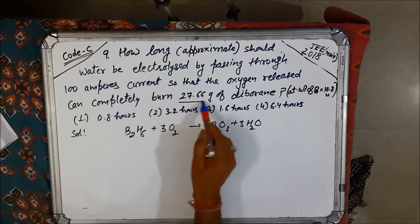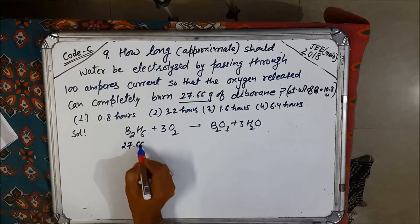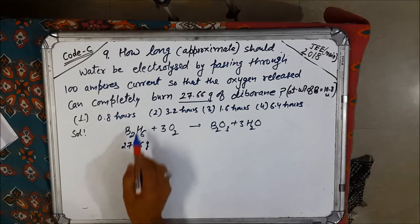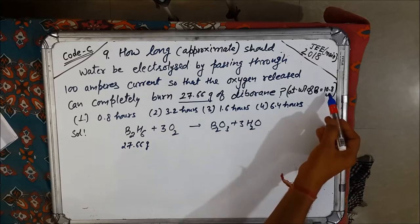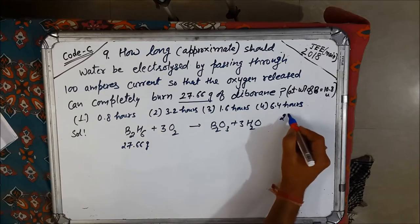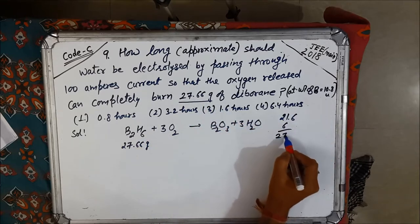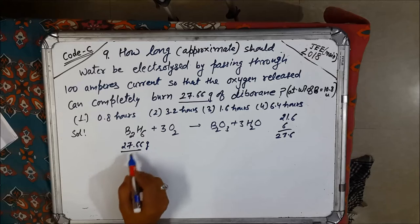Now diborane is 27.6 grams. So what is the molecular weight of B2H6? 10.8 for boron, so 10.8 times 2 is 21.6 plus 6, so it is 27.6, which means almost 1 mole.